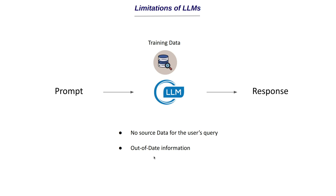There is also the issue of out-of-date information. If you ask about a particular Python library and its version has changed since the LLM was trained, the LLM won't have that updated information. If information has been updated but the LLM doesn't have access to it, it will give an inaccurate response. It also tends to hallucinate when it doesn't know the answer — it tries to make up answers. These are the key limitations that retrieval augmented generation helps solve.